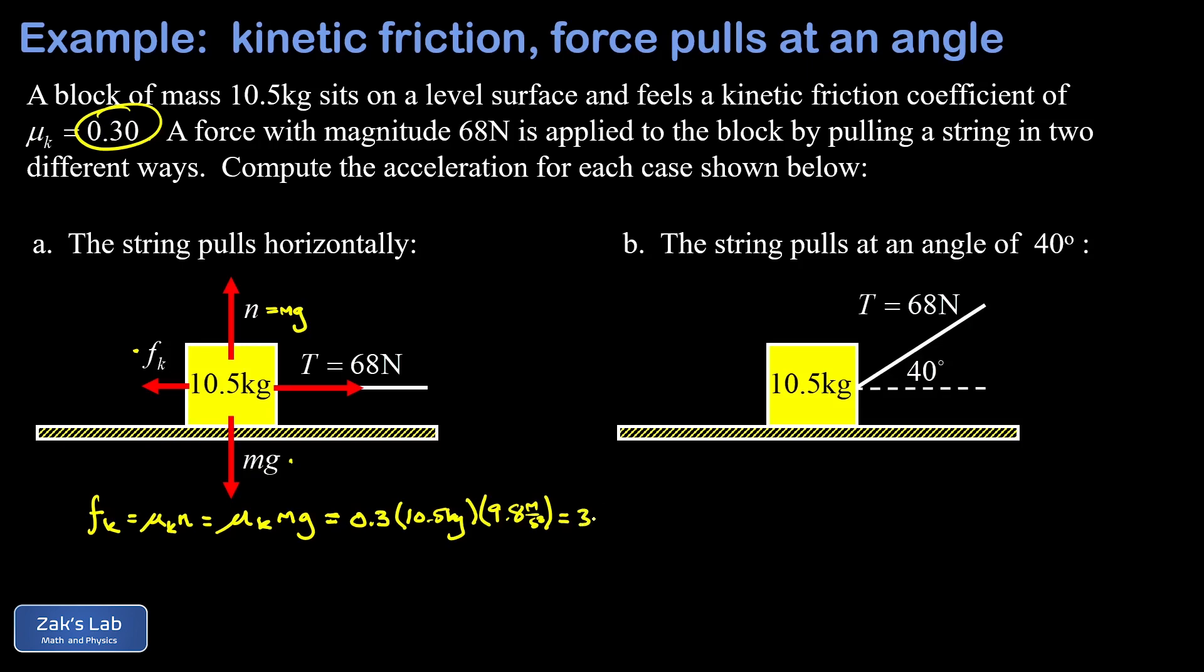Now to find the acceleration of the block, we just apply Newton's second law. F net equals ma. This means the acceleration of the block is F net divided by the mass. So a equals F over m is a good way to remember Newton's second law.